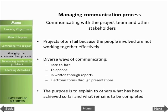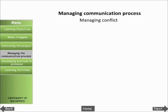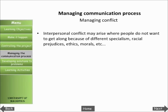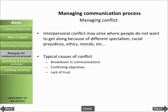Effective team working in a multi-disciplinary context can be hindered by lack of understanding of each other's roles. It is inevitable that conflict will develop at some stage in any project team composed of people with different personalities, backgrounds, experiences, and specialist skills. Interpersonal conflict may arise where people do not want to get along because of different specialisms, racial prejudices, ethics, morals, etc. Typical causes of conflict include breakdown in communications, conflicting objectives, and lack of trust. Ambition, jealousy, and simply the wrong chemistry are not unusual.